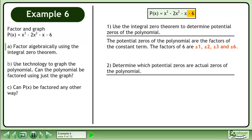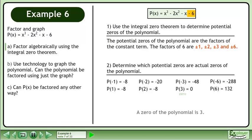Next, determine which potential zeros are actual zeros of the polynomial. The calculations for this step are shown. A zero of the polynomial is 3.